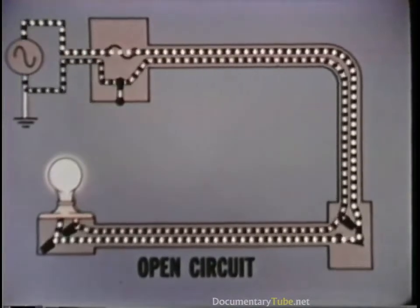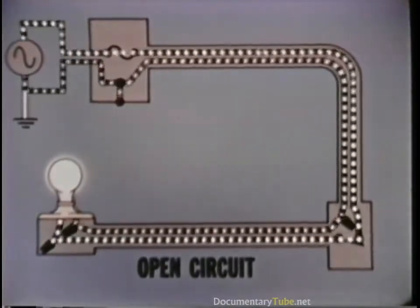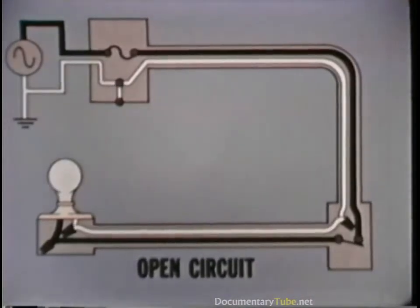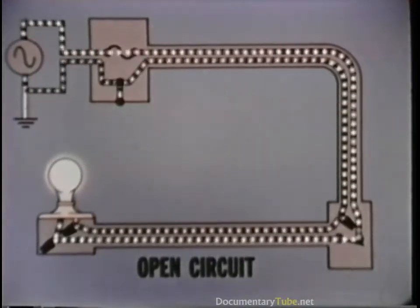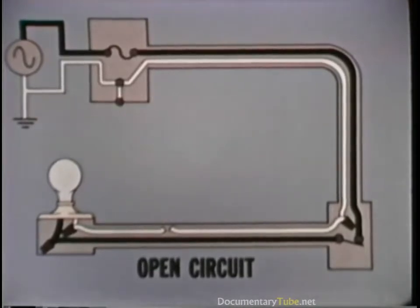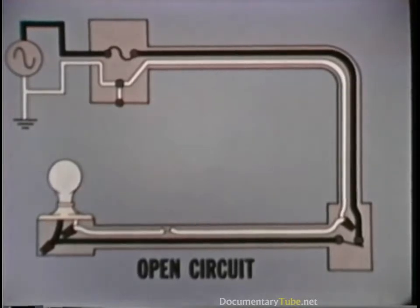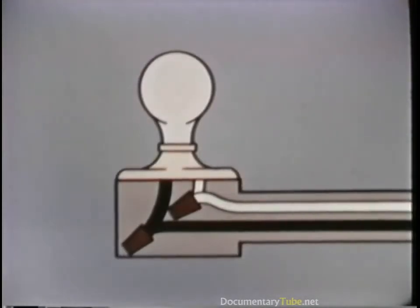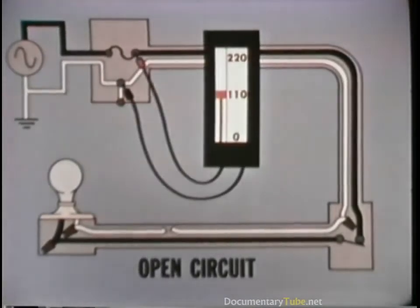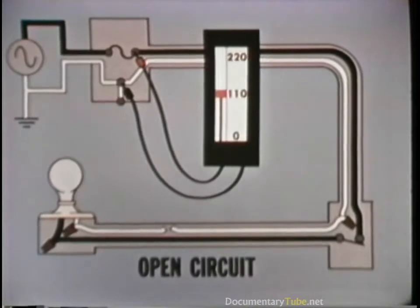Perhaps the most common trouble in wiring circuits is an open circuit. In lighting circuits, the most common fault is a burned-out bulb. But sometimes the trouble may be caused by a loose or broken wire, requiring troubleshooting to locate it. Since the fuse did not blow, we suspect that the problem is an open circuit. Inspection or replacement of the light bulb reveals that it is good. The voltage tester will be valuable for this test. Checking at the source, there is voltage at the fuse box.